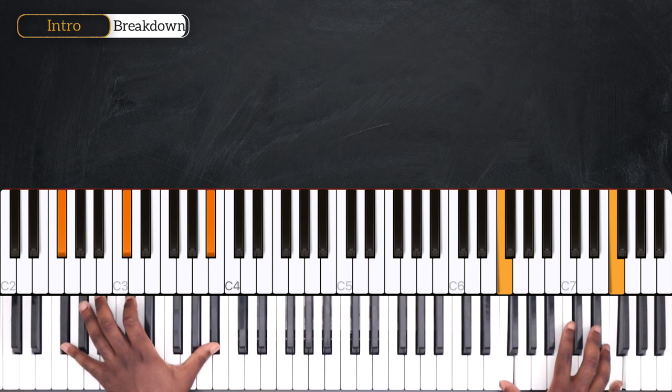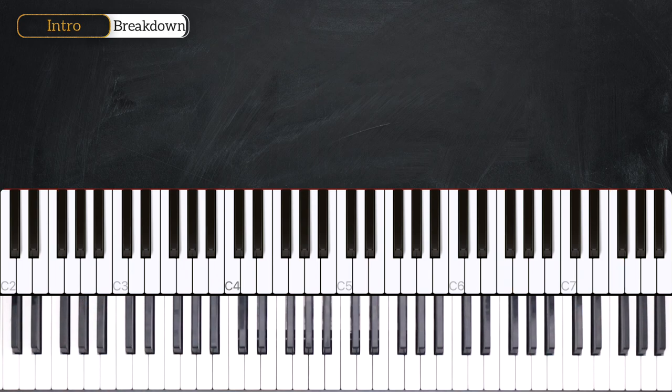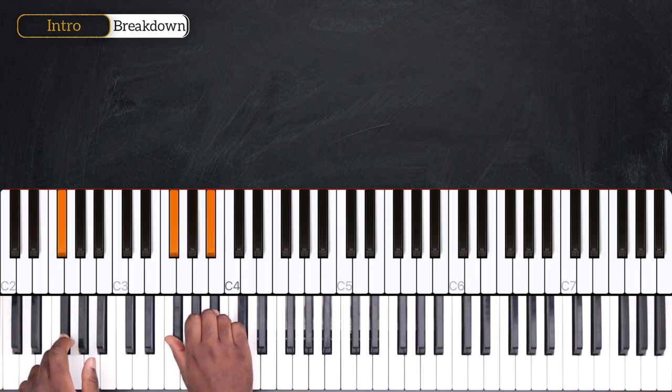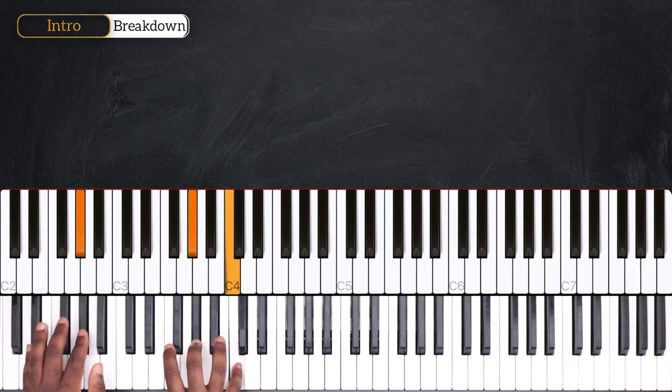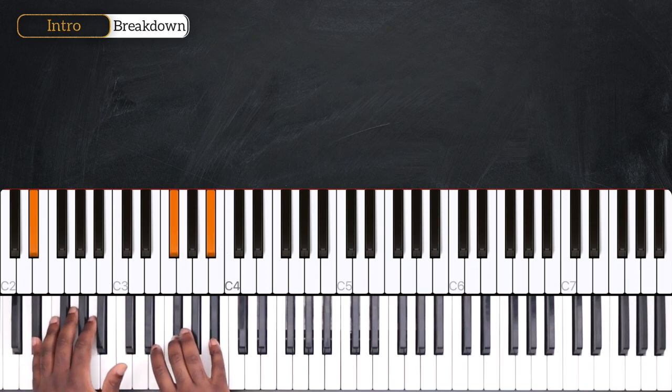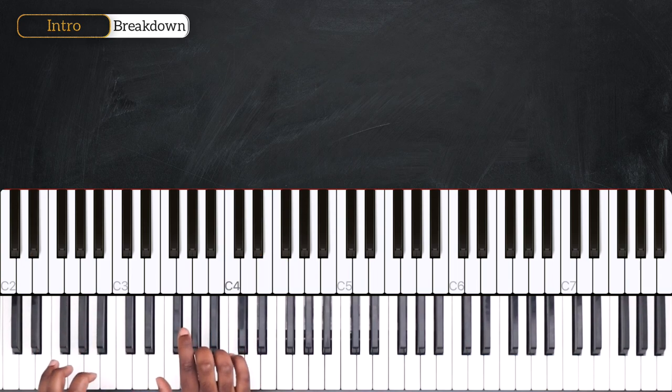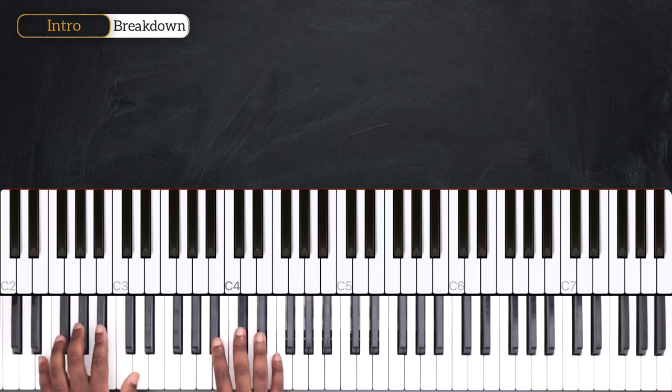So, from the top, two, three, four. F, Gb, Ab, and then Eb minor. Play the melody. F minor, Bb minor.